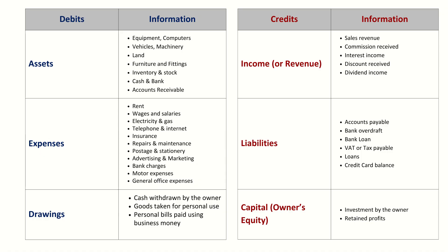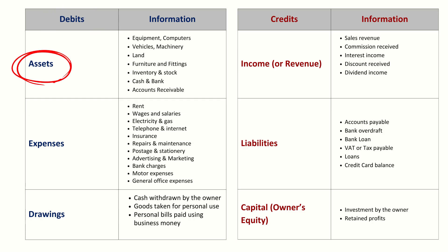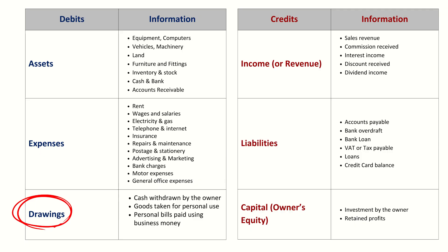To remember how each type of account behaves, it helps to understand what increases or decreases them. On the debit side: Assets — when the business owns or receives something of value, we debit the asset account; for example, buying equipment or a vehicle. Expenses — when the business spends money or incurs a cost, we debit the expense account; for example, paying rent, wages, or electricity bills. Drawings — when the owner takes money or goods out of the business, we debit drawings because it reduces capital; for example, the owner withdraws £500 for personal use.